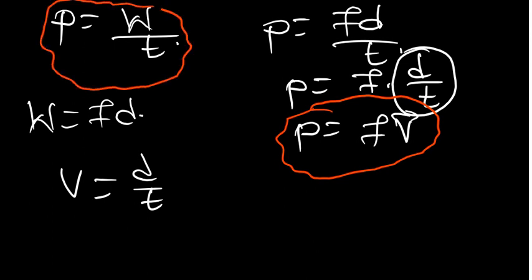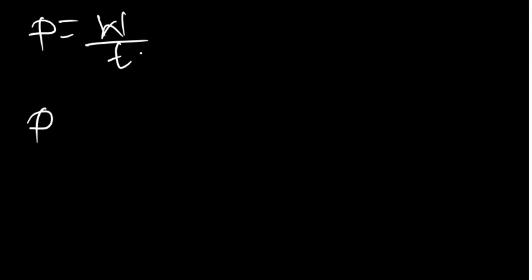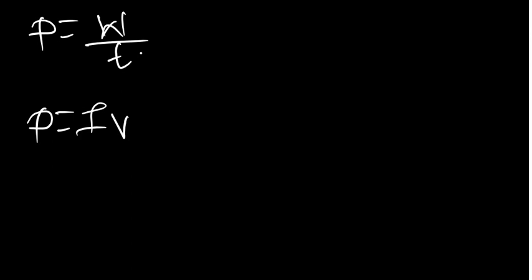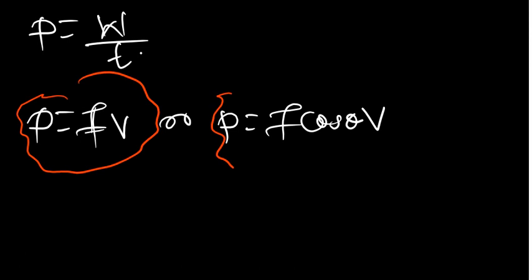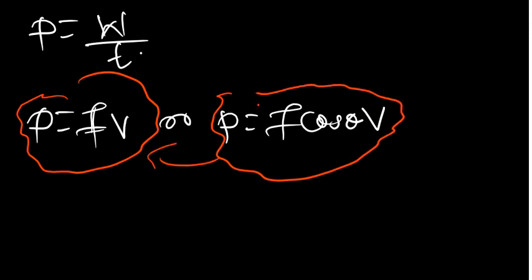If you have the work and the time, you can find the power using P = W/t. So in general, the two main formulas for power are P = W/t and P = Fv. In the case where a force is applied at an angle, the formula becomes P = F·cosθ·v.